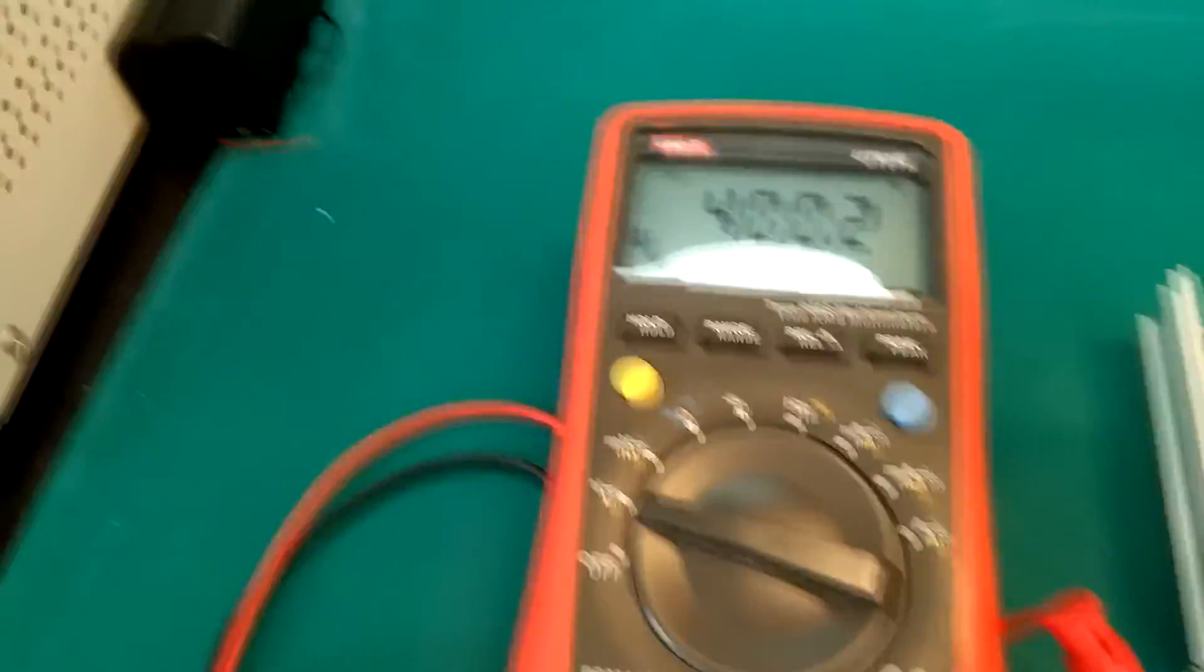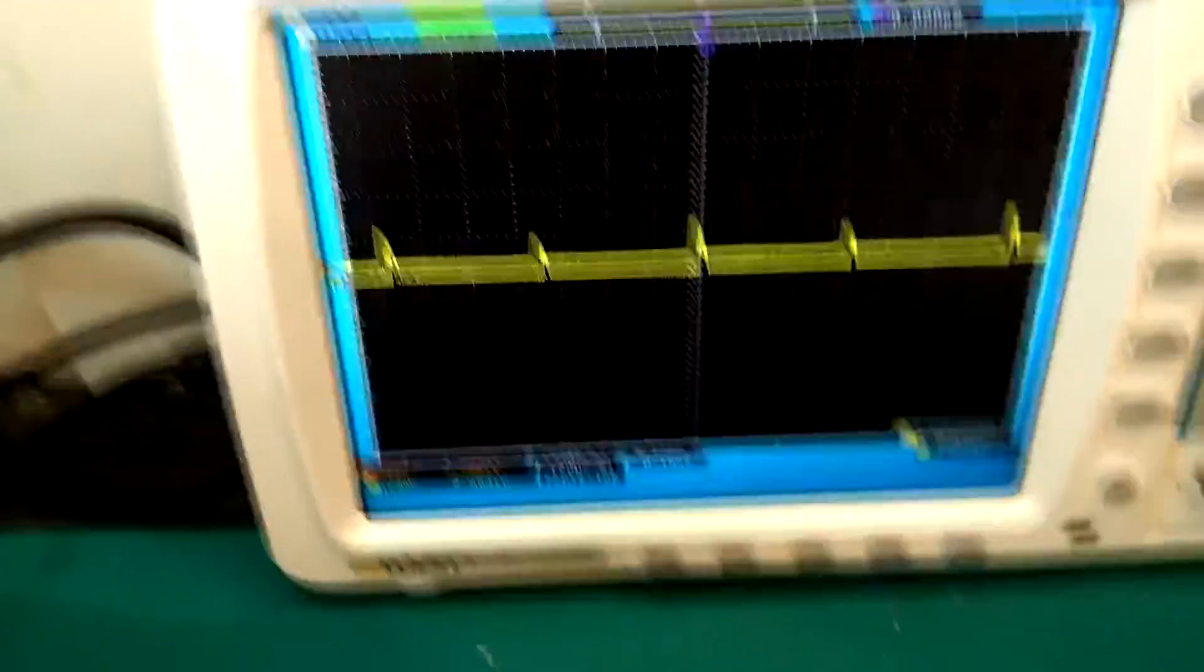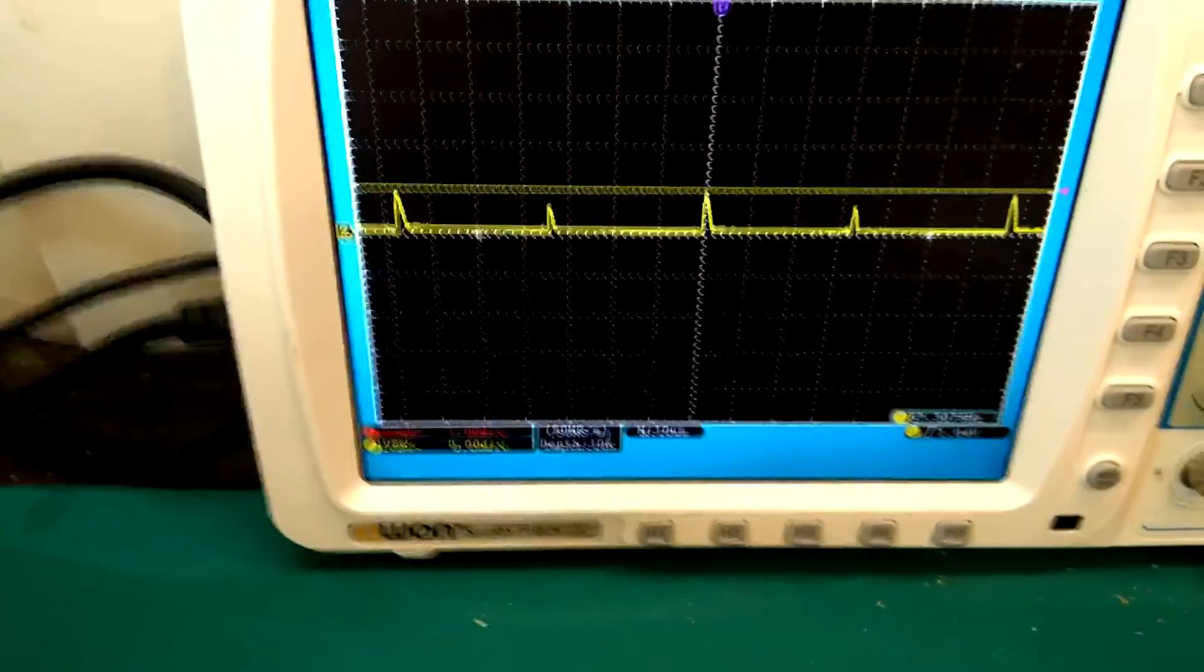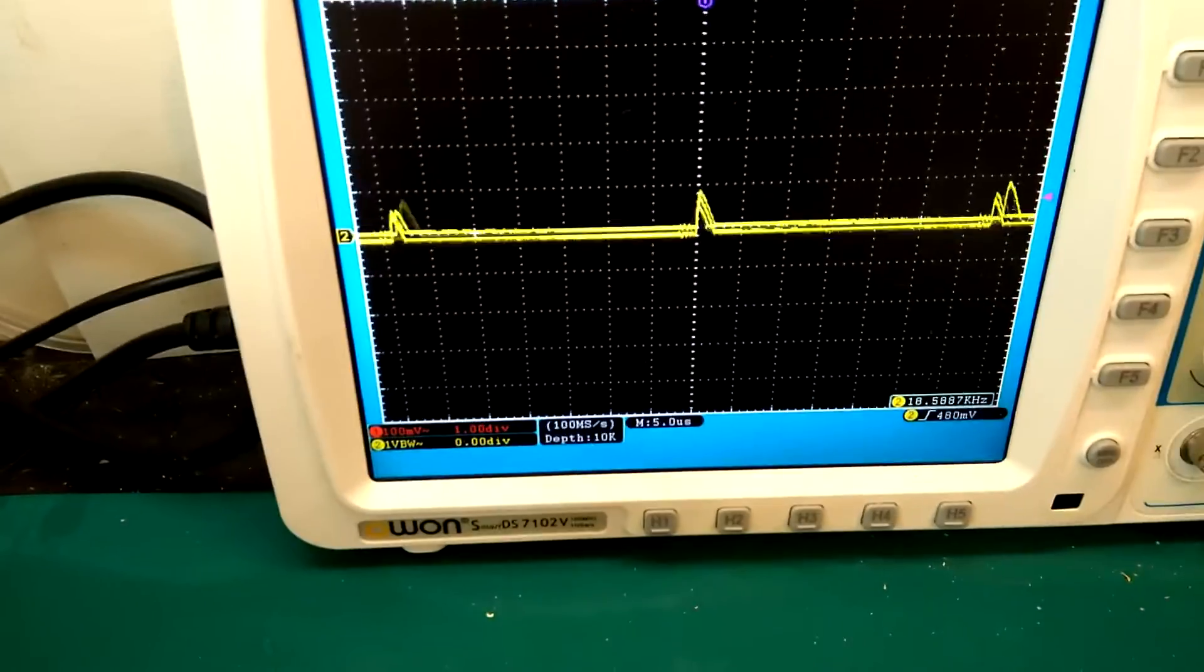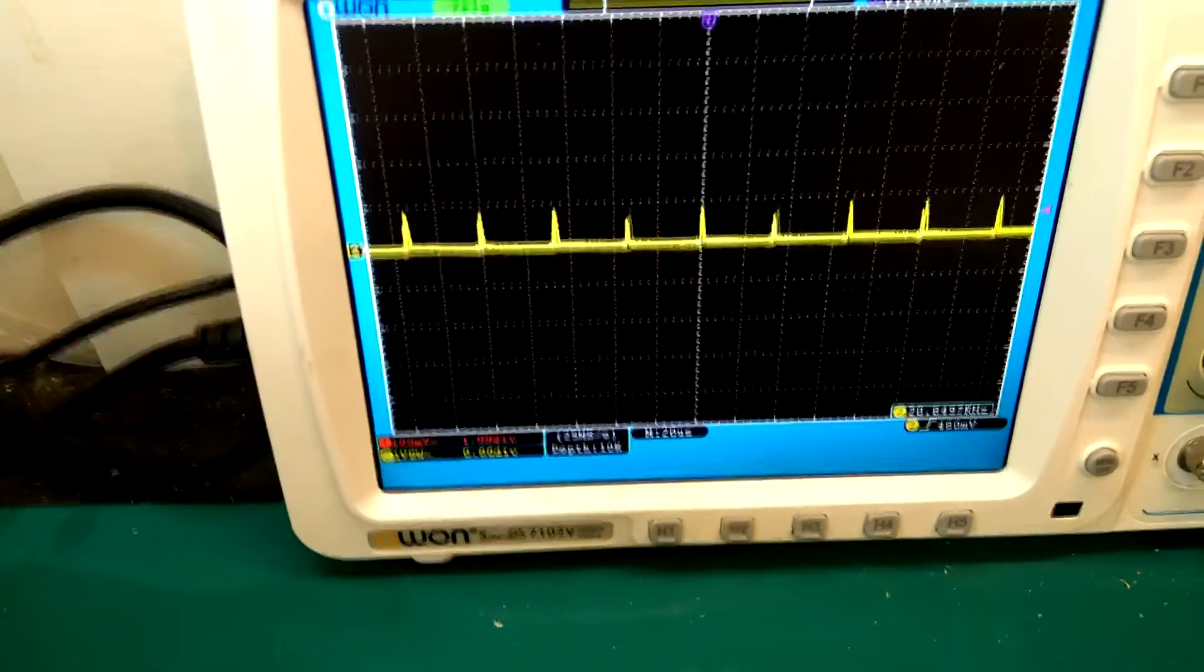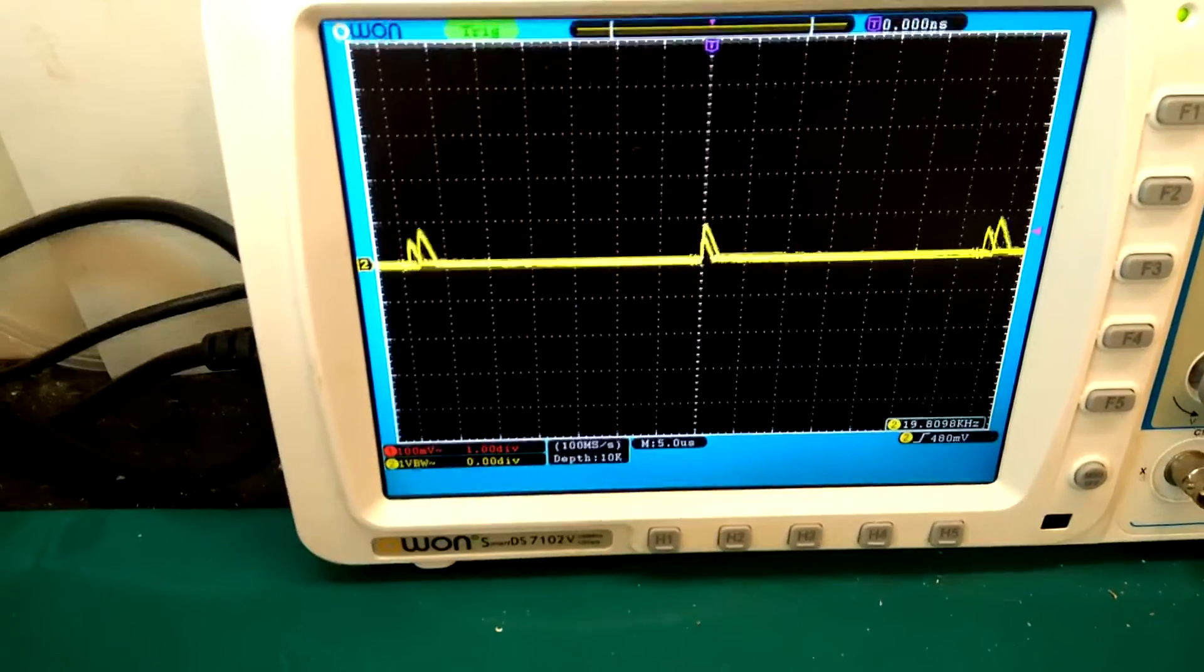Okay, everything looks good. If we look over on the scope here, see there's a little bit of ripple. It doesn't really look like switching noise, it does actually look like a ripple.